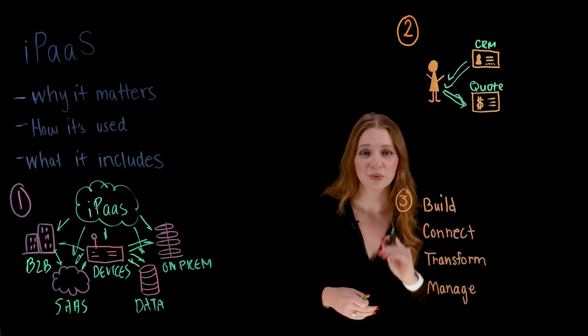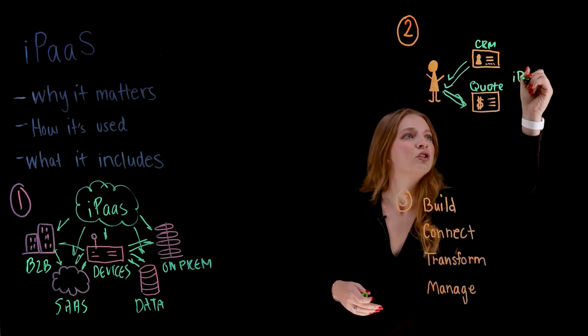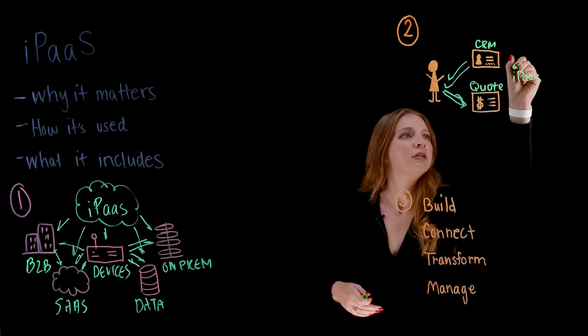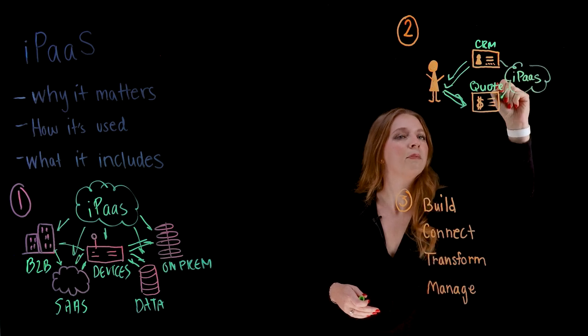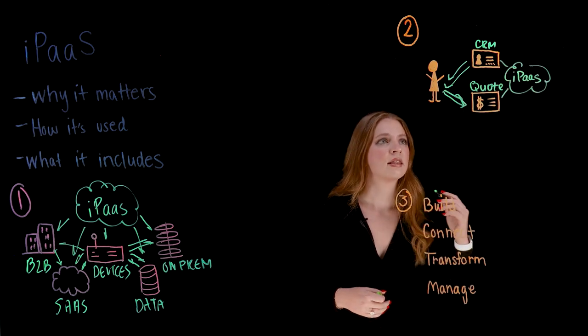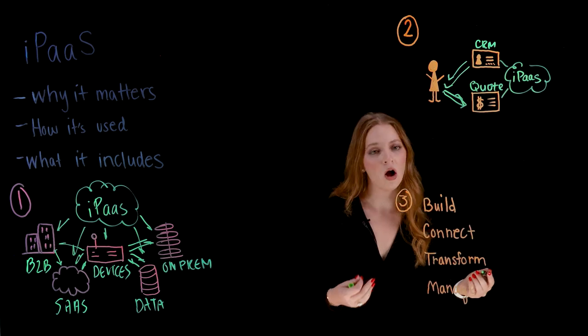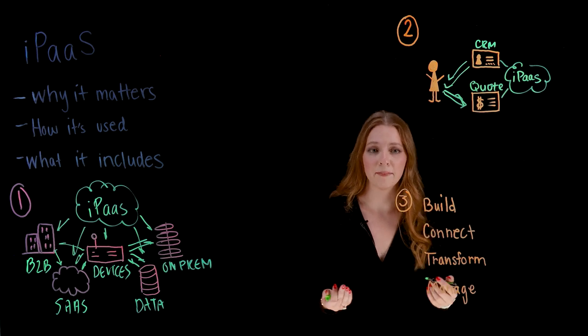Again, this is where iPaaS can make the whole entire process more efficient by sitting right between these two applications and building an integration between both of them, rather than requiring Taylor to serve as the middleman. This means as soon as she starts typing the customer's name within the quoting system, it can populate all of the corresponding data for her automatically.